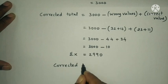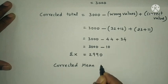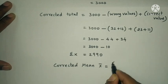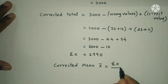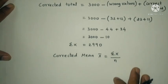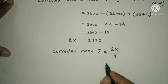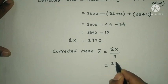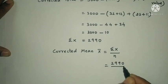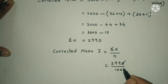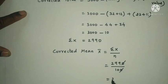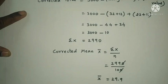Corrected mean x̄ = Σx / n = 2990 / 100 = 29.9. So the corrected mean value is 29.9.